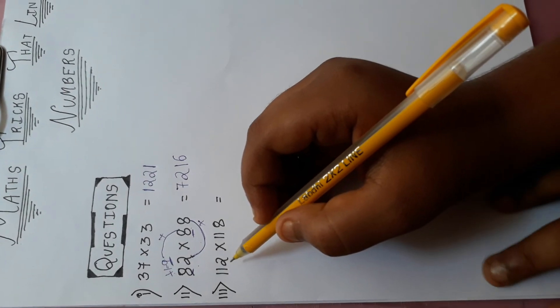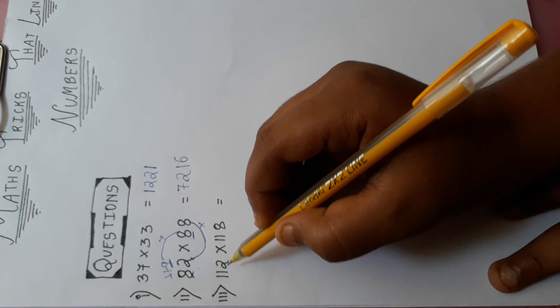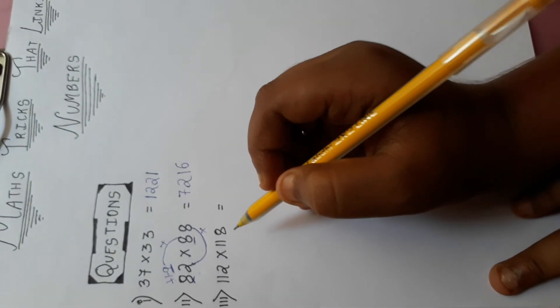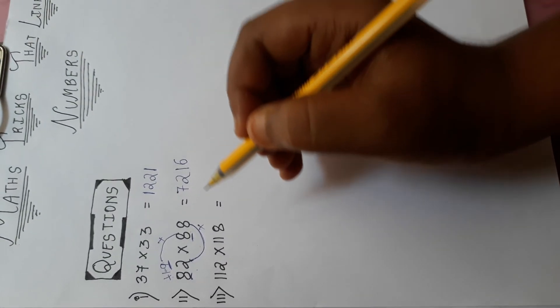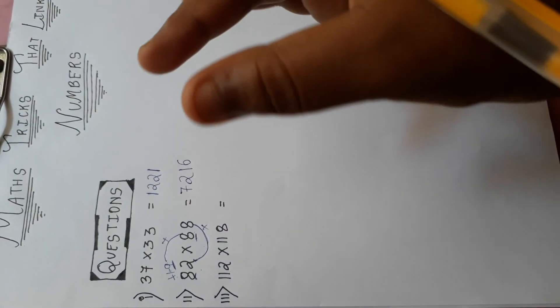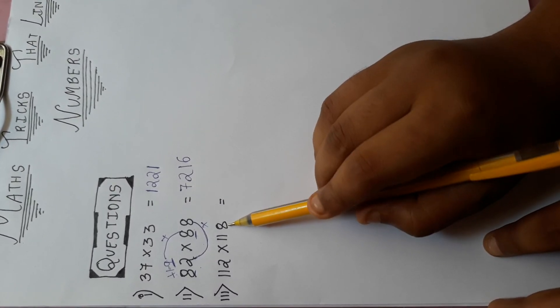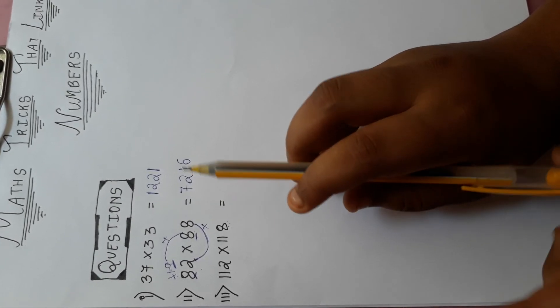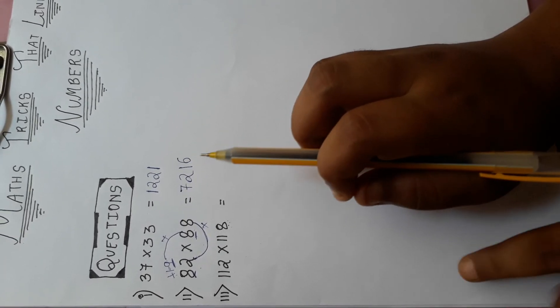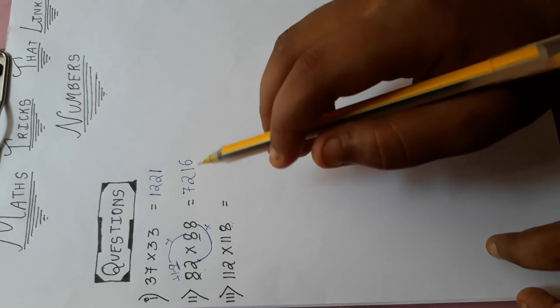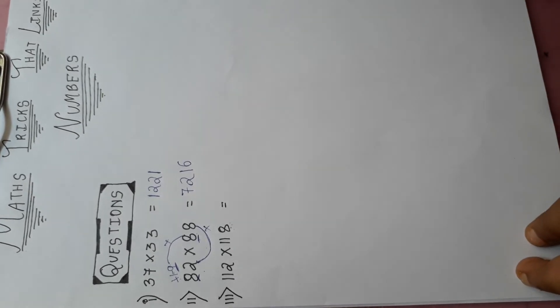Now the next question. See, it looks might be typical but it is very easy. First of all, the basic is that here this one space we want to keep just one single number. And the rest of all numbers we want to multiply. First we have to do plus 1, then we have to multiply.